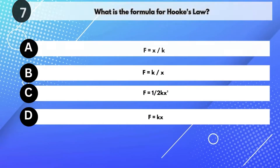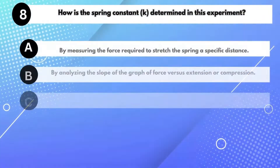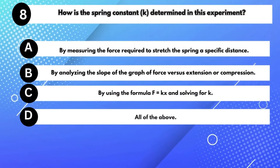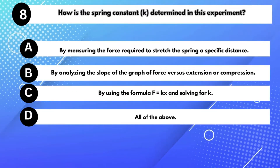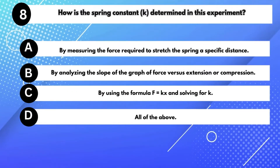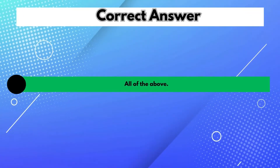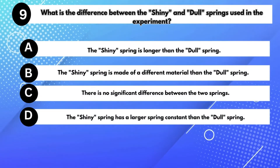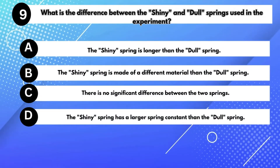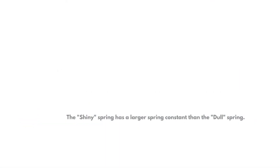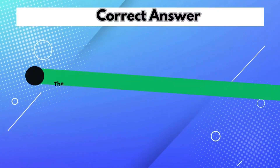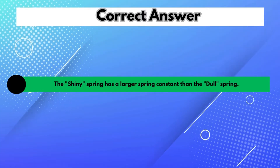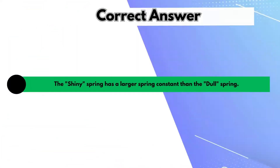What is the formula for Hooke's Law? Answer D: F equals kx. How is the spring constant k determined in this experiment? Answer D: All of the above. What is the difference between the shiny and dull springs used in the experiment? Answer D: The shiny spring has a larger spring constant than the dull spring.